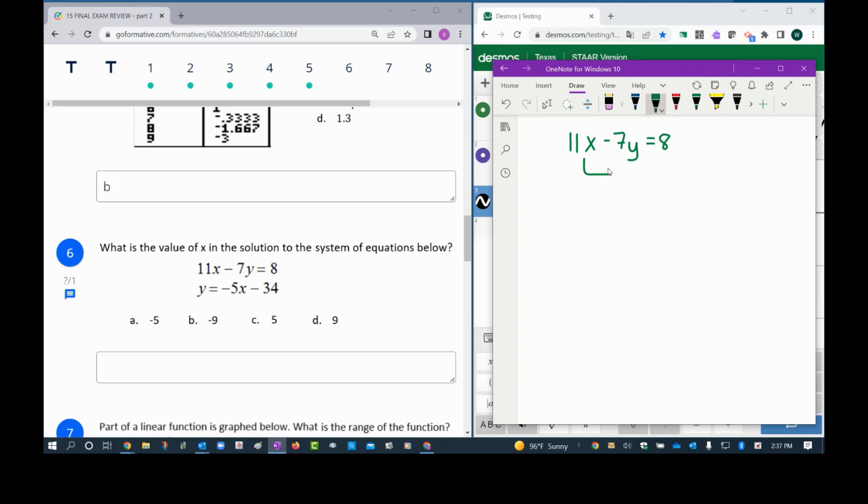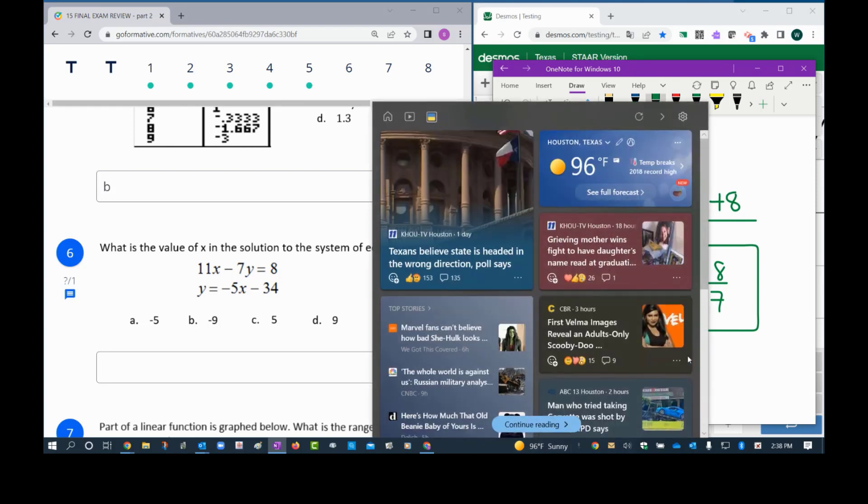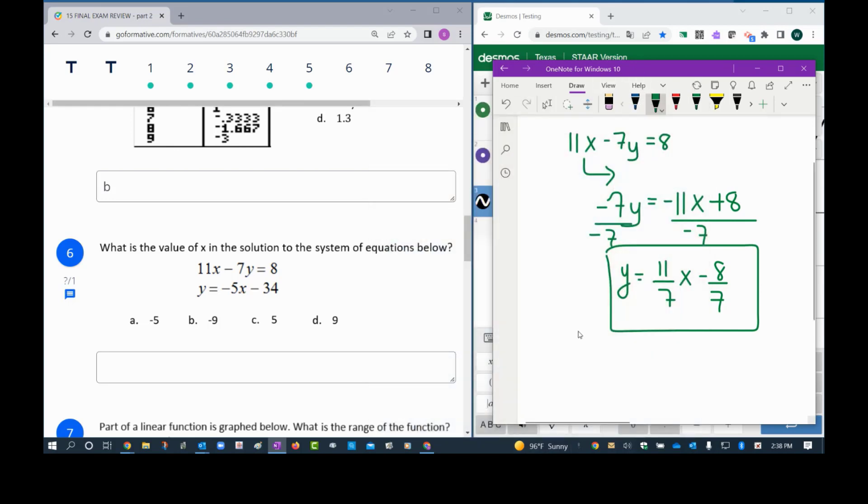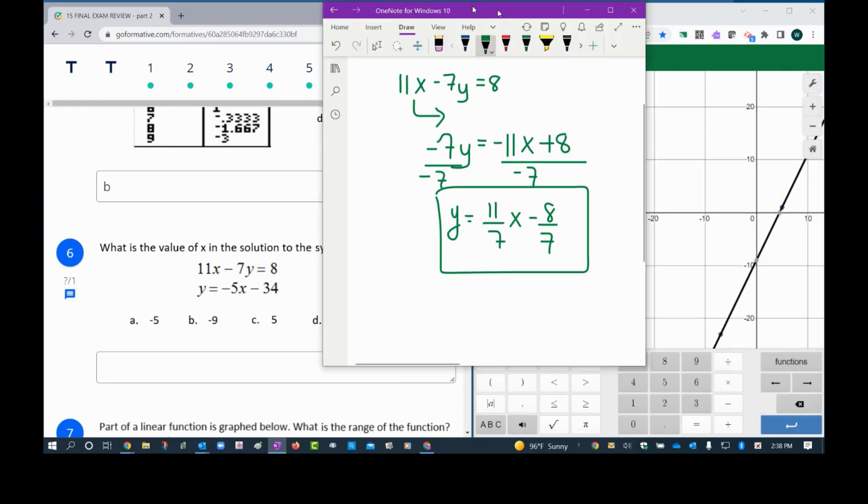So what we're going to do is first clear this out here so we have some space. And the first equation there's a little bit of work that I need to do, and that work is that I need to get the y alone. So 11x minus 7y equals 8. To get the y alone, I'm going to move the 11x to the other side, so this would be negative 7y equals negative 11x plus 8.